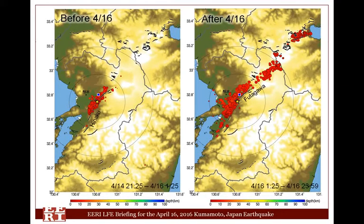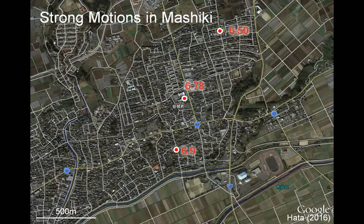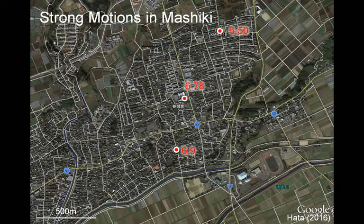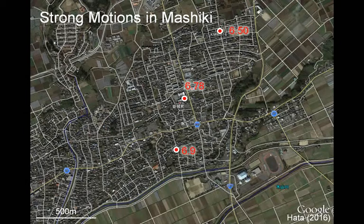Mashiki town, shown by the blue square, is the location recording seismic intensity scale 7. For both earthquakes, Mashiki town was located right above the fault line. There are several strong motion data recordings in this town. This figure shows the location of three major seismic recording stations in the center of the town.